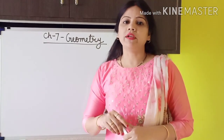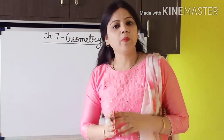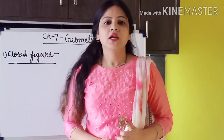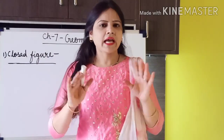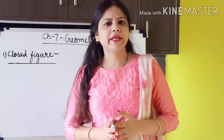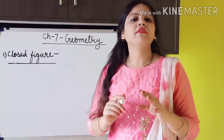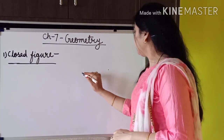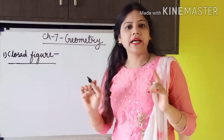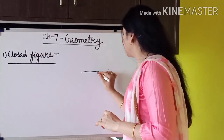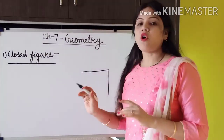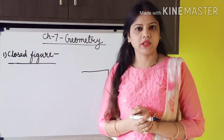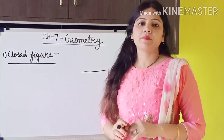So in this video, we will cover two things: the open figure and the closed figure. Let us start. First, we will look at the closed figure. We have already learned about plane figures and about points. When we join these points with the help of a ruler, they become a line. All the shapes are drawn with the help of lines; all shapes are made up of lines.